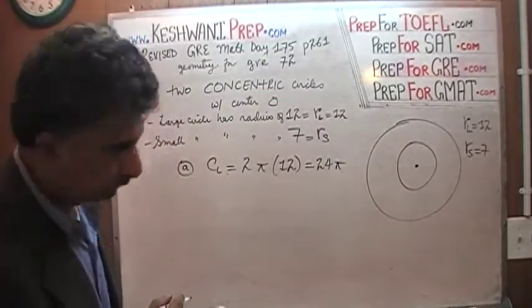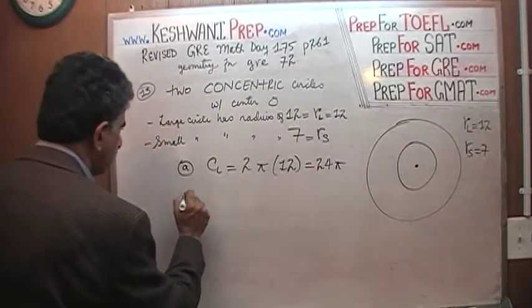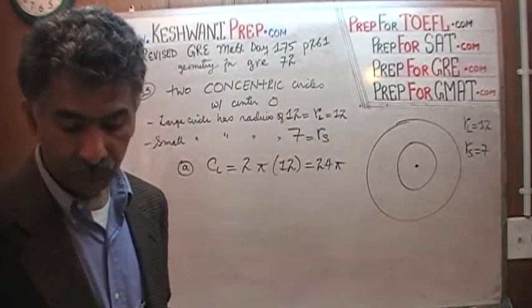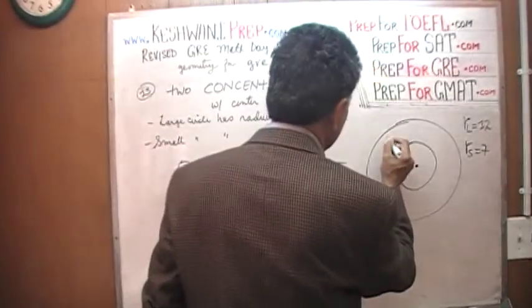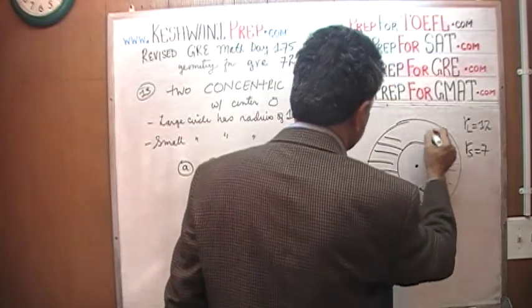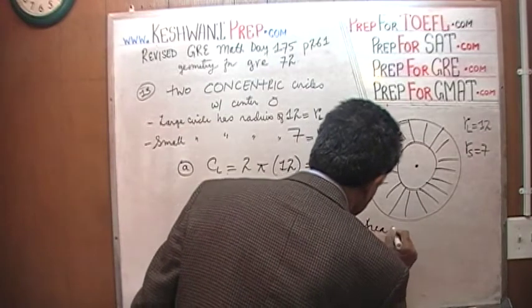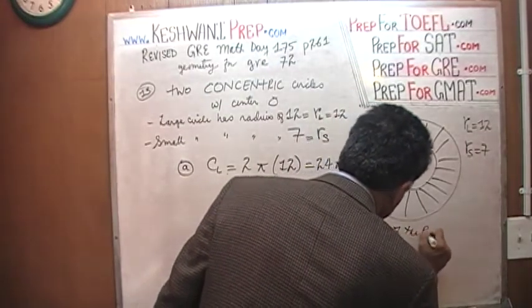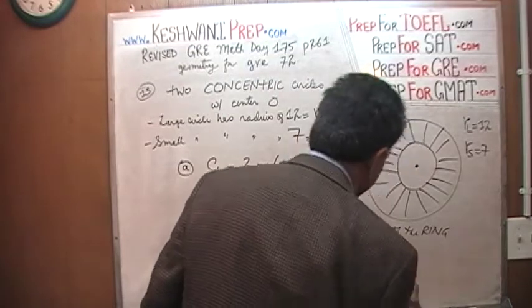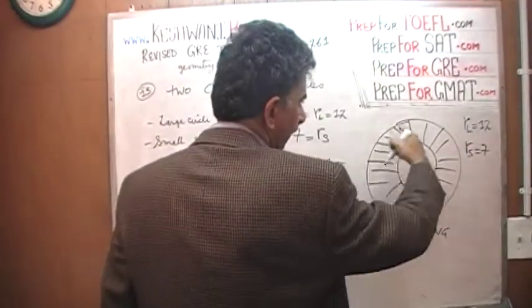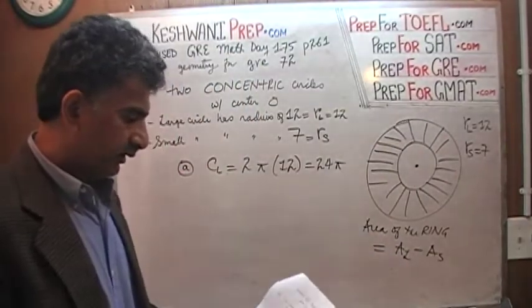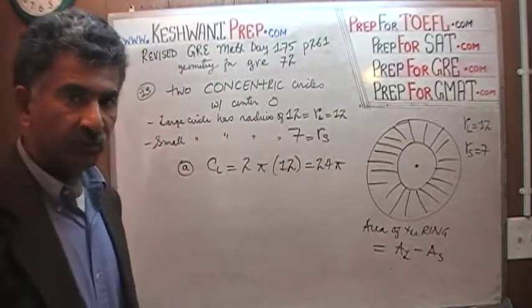Then they ask you for the area of the small circle. Let's do the area of the small circle and the area of the large circle together because in the last part they are looking for the area of the ring. And the area of the ring is simply the area of the ring equals the area of the large circle minus the area of the small circle.